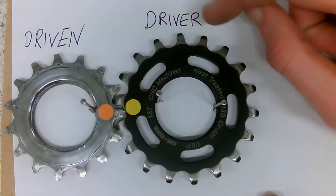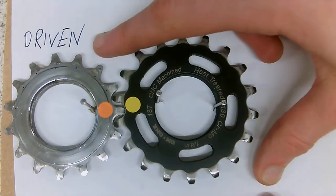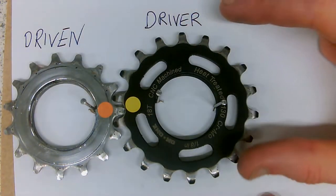Here we have two gears. We've got one gear which we're going to turn which we're going to call the driver and one gear that is going to be turned which we're going to call the driven gear.